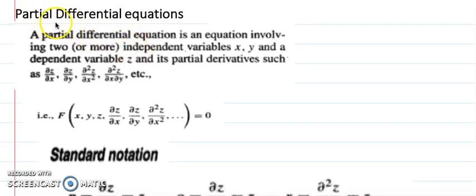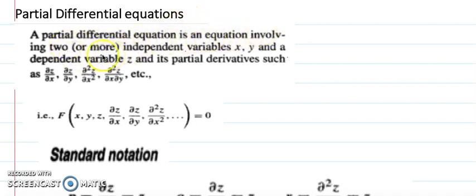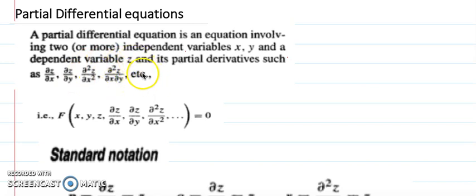Hello everyone, today I'm going to discuss partial differential equations. My main topic will be the formation of partial differential equations by two methods. A partial differential equation involves two or more independent variables and one dependent variable. For example, X and Y are independent variables and Z is dependent. We can take partial derivatives of Z with respect to these independent variables — first order, second order, and so on. Any expression involving the dependent variable, independent variables, and derivatives of any order set equal to zero is called a partial differential equation.